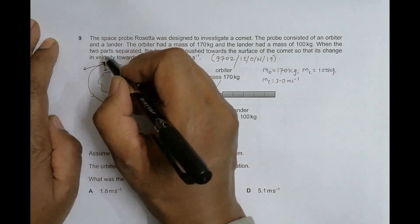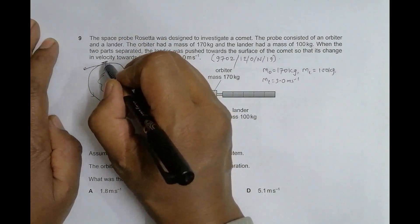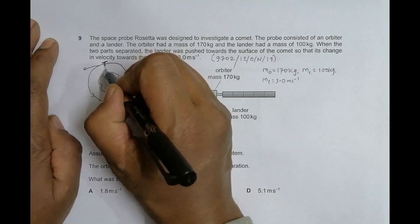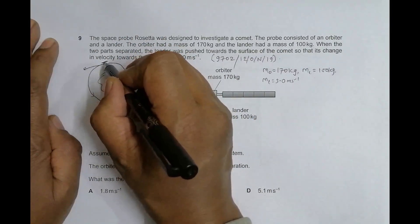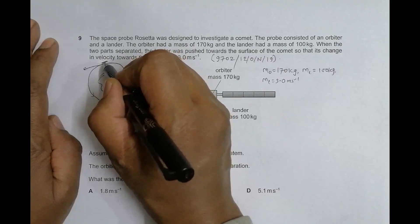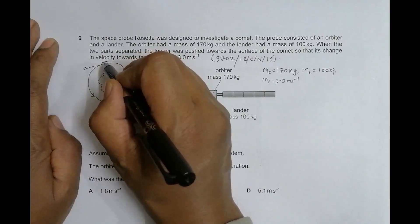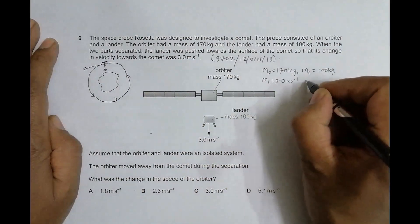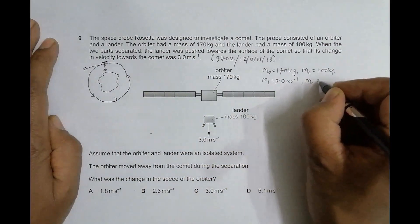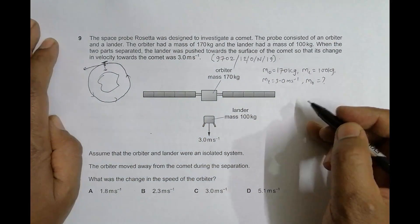Once again, the orbiter was not moving towards or away from the comet in the beginning, so the velocity change will be equal to this velocity minus zero. The change is equal to this velocity itself. We have to find the orbiter velocity, so we're going to use the principle of conservation of momentum.